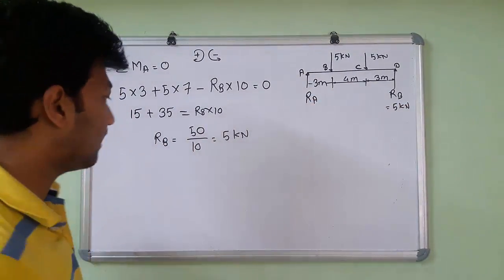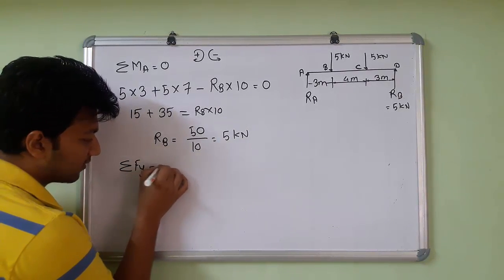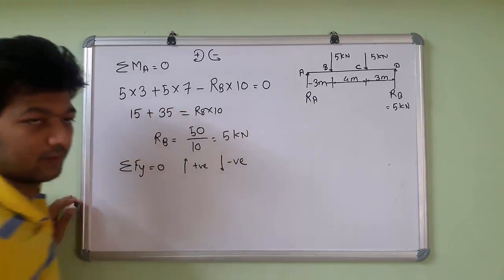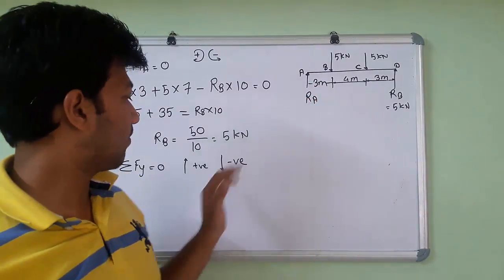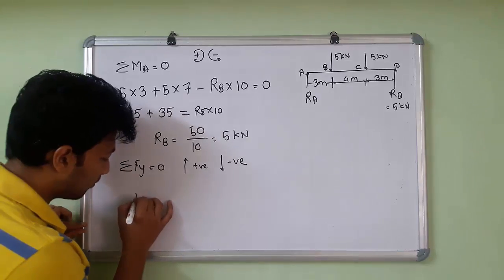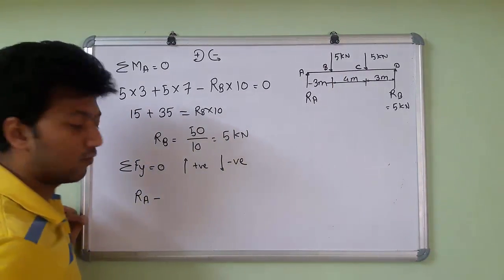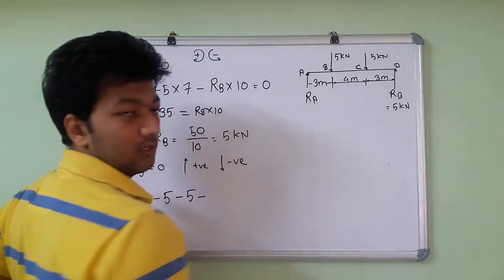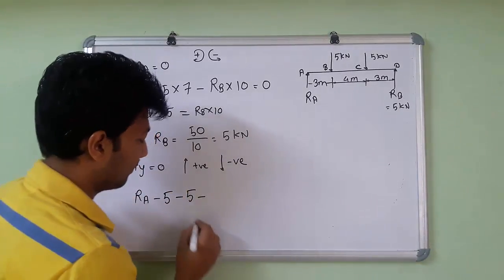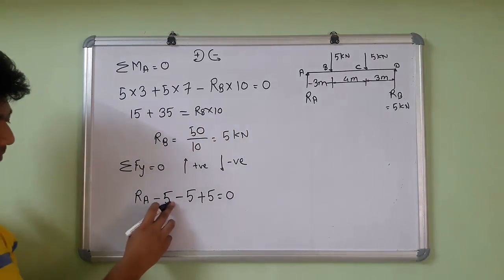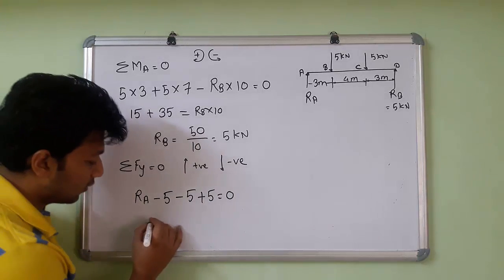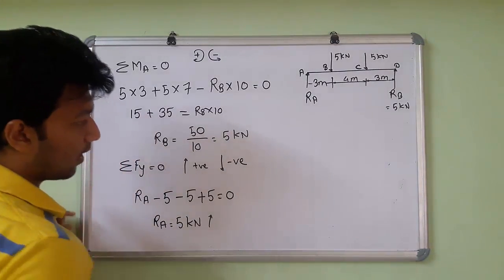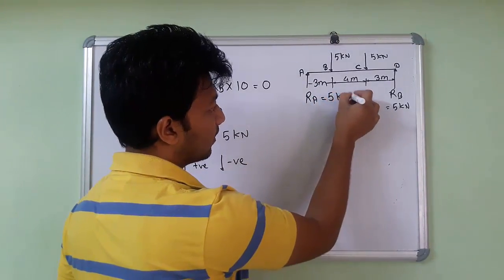Now we have to find RA. We take the summation of forces in the Y direction equal to zero. Upward forces are positive and downward forces are negative. RA is going upward, so positive RA. 5 kN moves downward, so minus 5. Again 5 kN downward, so minus 5. RB moves upward and equals 5, so plus 5 equals zero. Plus 5 minus 5 cancel, leaving RA equals 5 kN upward.